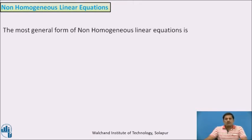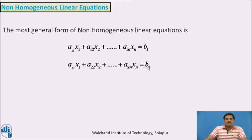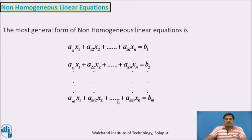The most general form of the non-homogeneous linear equations is: a11·x1 + a12·x2 + ... + a1n·xn = b1; a21·x1 + a22·x2 + ... + a2n·xn = b2; and continuing, the last equation is am1·x1 + am2·x2 + ... + amn·xn = bm. Such a system is called a non-homogeneous system of linear equations.